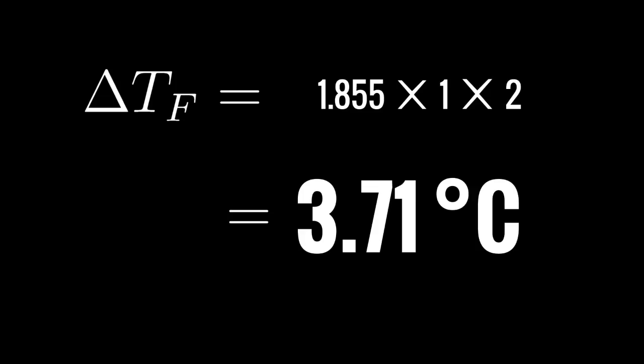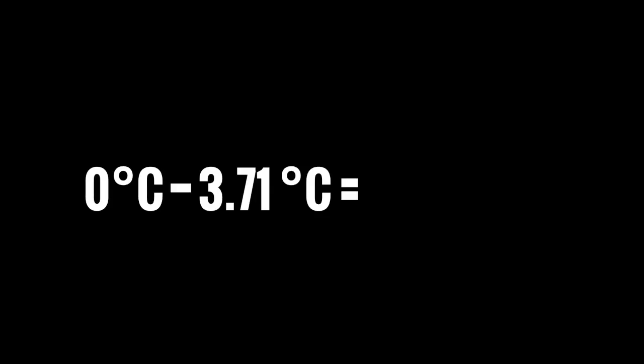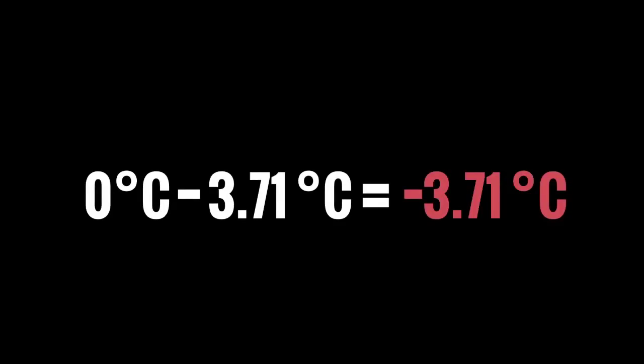But that's not the answer, that's just the freezing point depression. So if we had our regular freezing point, which is 0 degrees Celsius, and we subtracted our freezing point depression, which is 3.71 degrees Celsius, we would get our new freezing point, which is negative 3.71 degrees Celsius. And that is our new freezing point once we add 10 moles of NaCl to 10 kilograms of water.